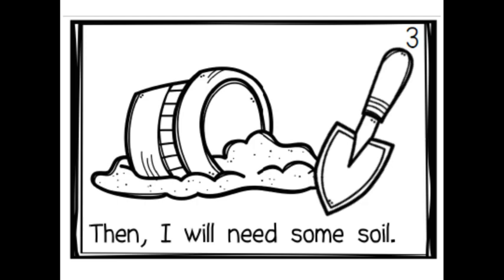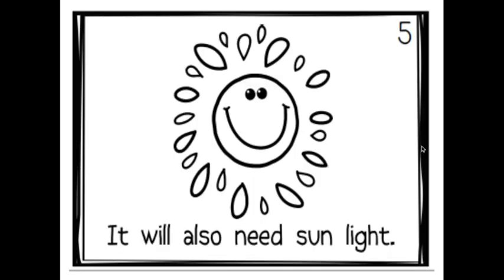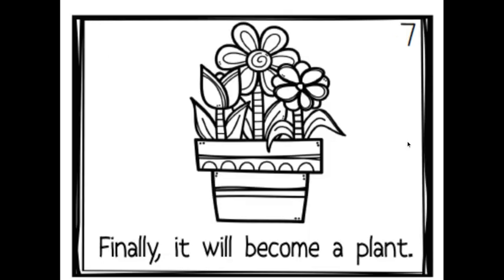Then I will need some soil. The seed will need water — so there's soil, there's water. Can you think of the other two things that it may need? Did you say sunlight? It will also need sunlight. Soil, sun, and water will make the seed grow and grow and grow. Finally, it will become a plant.